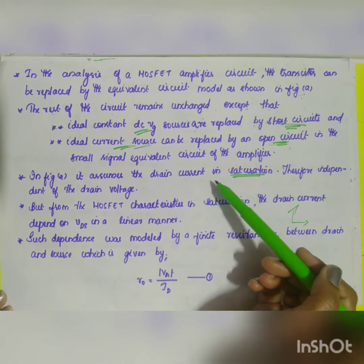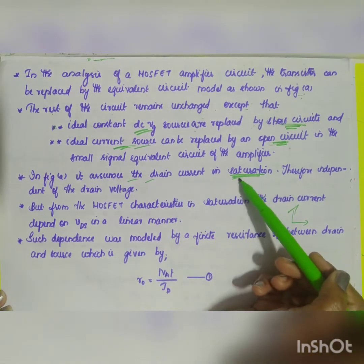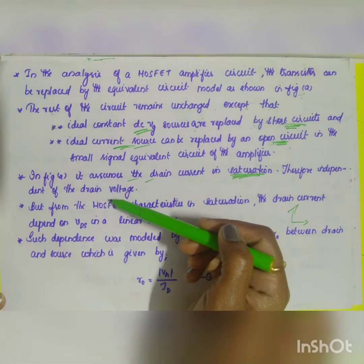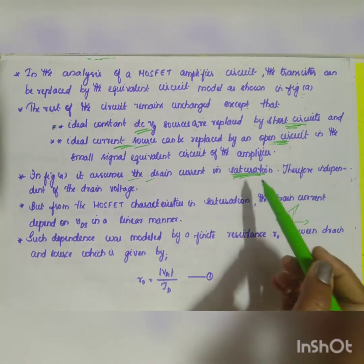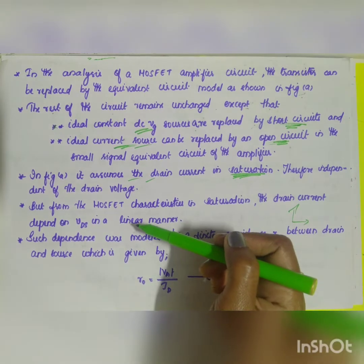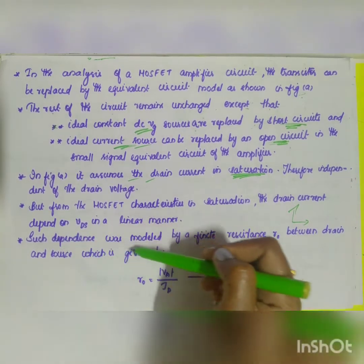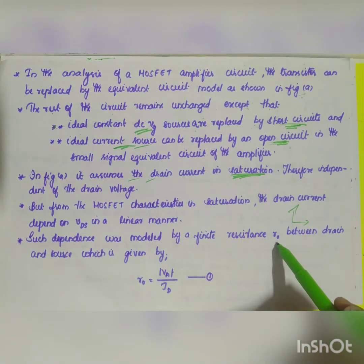In figure A, your drain current assumes that the drain current is in saturation, therefore independent of the drain voltage. But from the MOSFET characteristics in saturation, you know that the drain current depends on VDS in the linear manner. Such dependence was modeled by the finite resistance R naught.